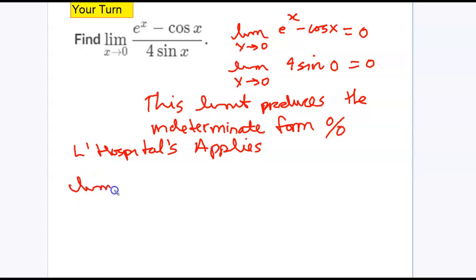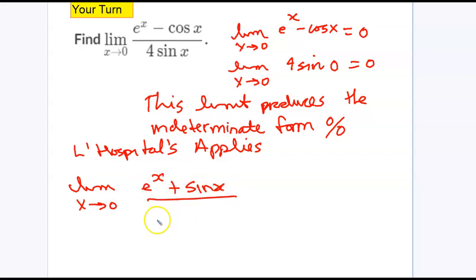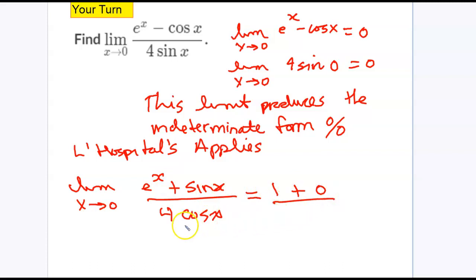So it's going to be the limit as x approaches 0. The derivative of the numerator is going to be e^x plus sin(x) over 4 cos(x). Evaluating at x = 0: e^0 is 1, sine(0) is 0, cos(0) is 1. I'm left with 1 over 4 as my final answer.